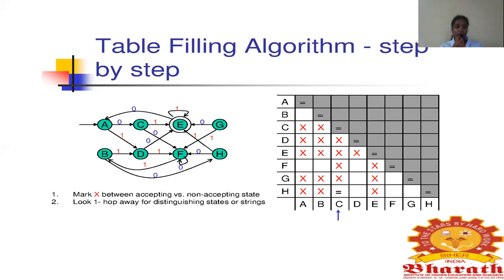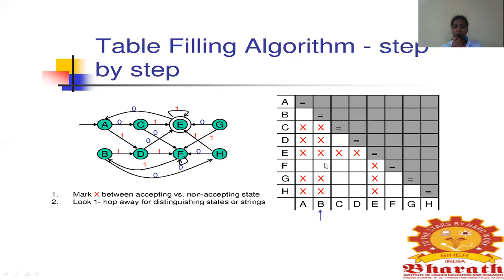For pair B,D: from B on input 0 you go to H and on input 1 to D — not the final state, so we cannot reach state E from B. For pair B,F: from F on input 0 you stay at F, which is not a final state, and on input 1 you go to B — also not a final state. From B you cannot reach the final state and from F you cannot either, so we do not mark this pair.